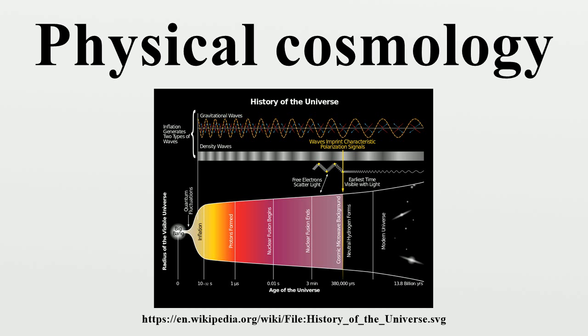Modern cosmology developed along tandem tracks of theory and observation. In 1916, Albert Einstein published his theory of general relativity, which provided a unified description of gravity as a geometric property of space and time. At the time, Einstein believed in a static universe, but found that his original formulation of the theory did not permit it.